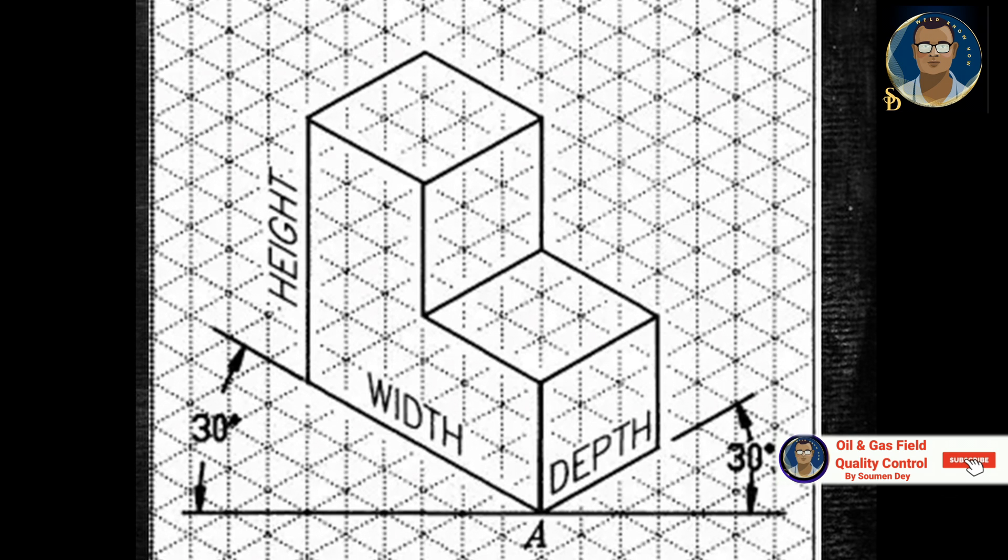If you are from an engineering background, then I hope you must have learned how to draw orthogonal projection of any object. Isometric drawings are the representation of a 3D object in a 2D plane. Isometric drawing is basically projection in which three coordinate systems appear into the same plane at 120 degrees apart.